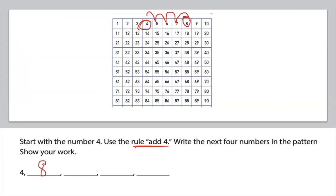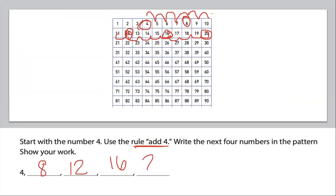That means the next number in my pattern is eight. Then I'm going to add four more — one, two, three, four — which puts me at 12. Four more: one, two, three, four lands me at 16. And then one, two, three, four lands me at 20.